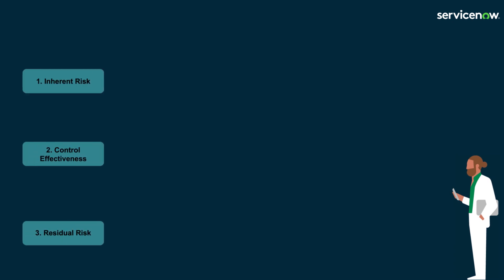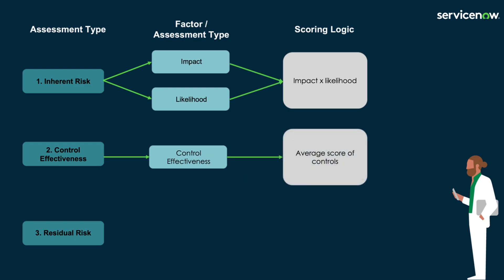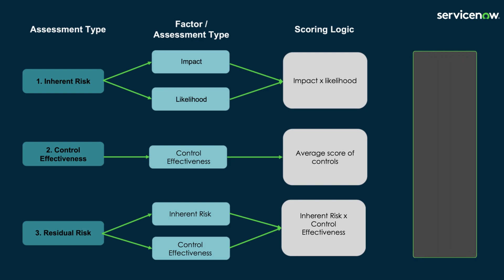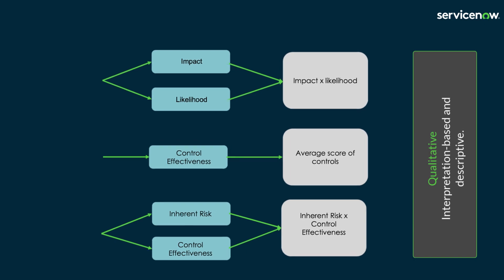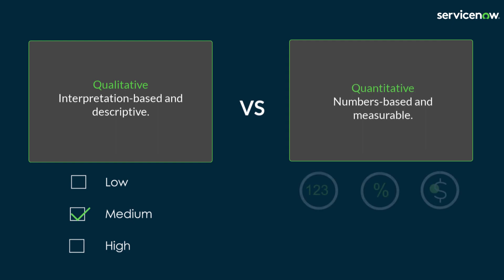Arjun will need three assessment types to analyse risks for his RAM. The Inherent Risk will use impact and likelihood factors with a product scoring logic. The Control Effectiveness will use a single Control Effectiveness factor with a weighted average scoring logic. The Residual Risk will be calculated using the Inherent Risk and Control Effectiveness assessment results. This approach is known as a Qualitative Risk Assessment, as the selection of likelihood, impact, and Control Effectiveness ratings are interpretation-based by the relevant assessors. Quantitative assessments, on the other hand, are numbers-based and measurable — for example, calculating the monetary loss value if the risk occurs.